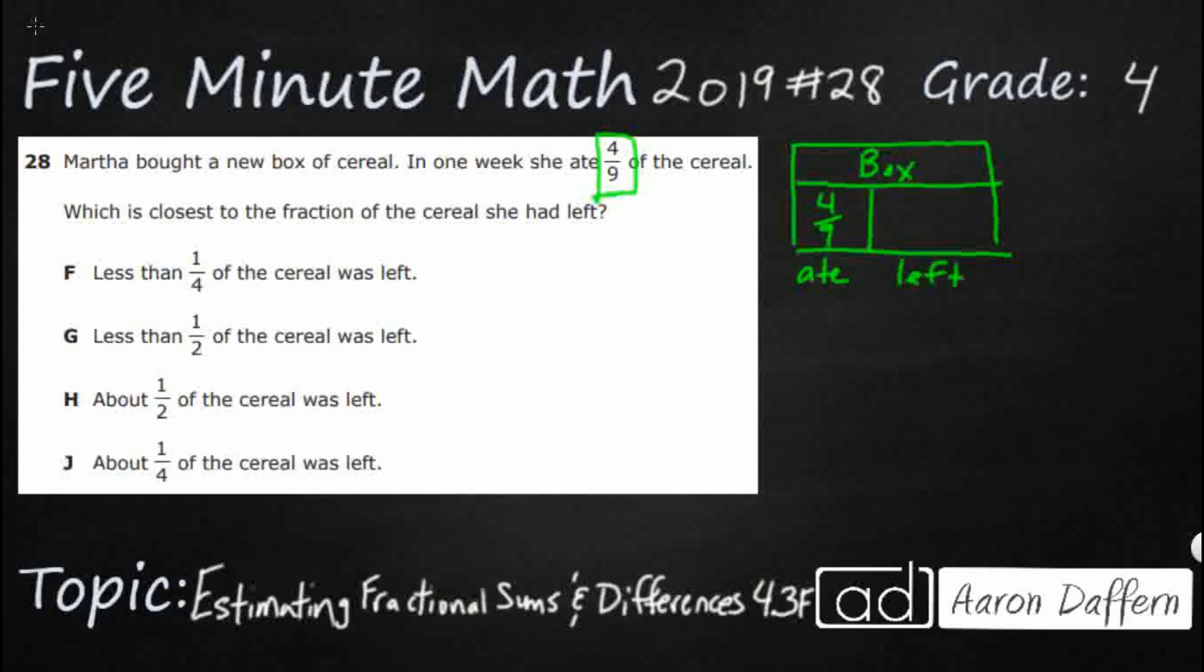Well, if we just go ahead and put it in ninths, she had one whole box, which is also one whole is the same as just nine-ninths. We can choose any fraction we want to represent that whole, and so we can say we've got nine-ninths minus the four-ninths she ate. So that's going to give us five-ninths left. So that makes sense. She's got five-ninths left, but we're just estimating what is this five-ninths near.